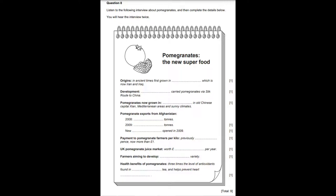This interest in pomegranates is good news for farmers. When their fruits were first exported, farmers received 34 pence per kilogram, but now they earn over one pound per kilogram. In the UK alone, the market for pomegranate juice has increased to 21 million pounds each year. Extracting juice is not easy because of the seeds, which is why farmers are trying to develop a seedless variety — fruit without seeds is expected to become very popular with consumers worldwide.